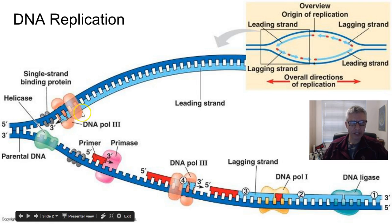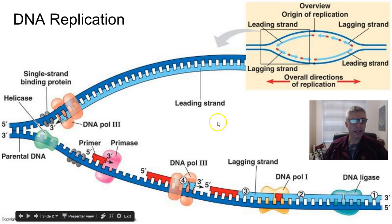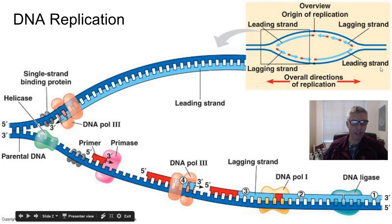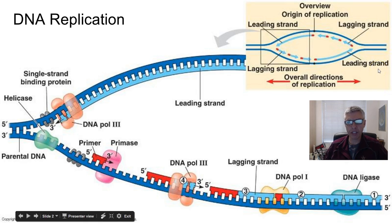How does it know where to start? There's an RNA primase, which is another enzyme that adds in a primer, which is a marker indicating where DNA polymerase III should attach and then start moving forward. The key piece here is that DNA polymerase III can only read the DNA in the three-to-five prime direction. The five prime is down here, so the leading strand runs nicely — the polymerase finds the three prime end and just starts working, putting in those free nucleotides.